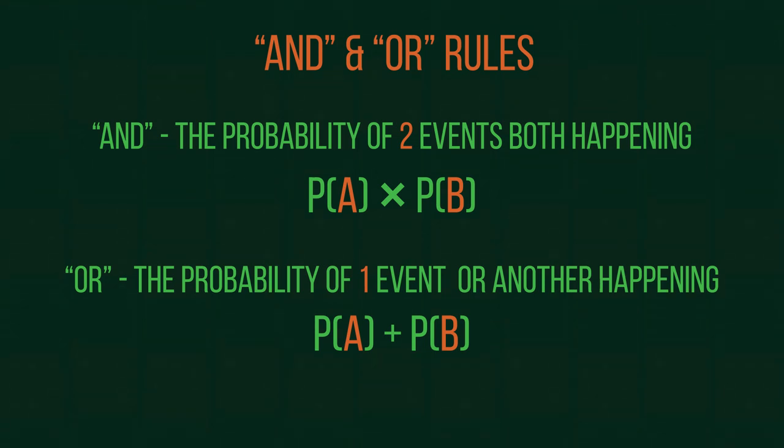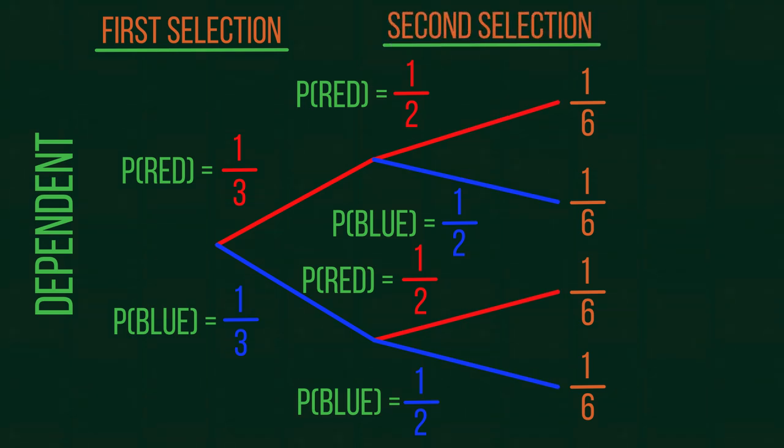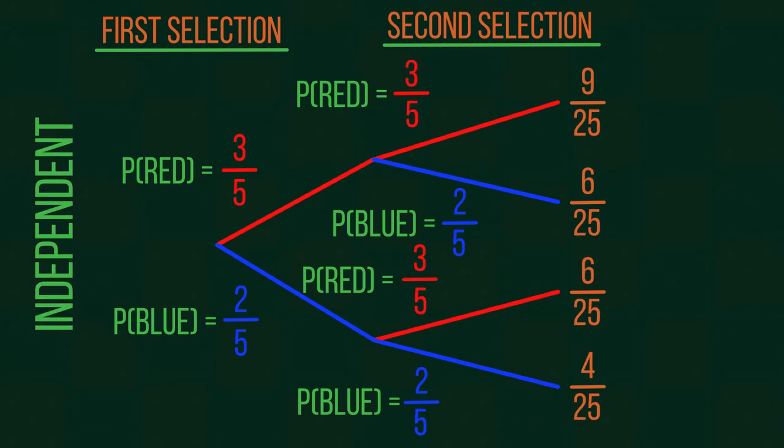There are two types of tree diagrams for two types of situations: dependent and independent. Dependent tree diagrams occur when the second probability is affected by the first. For example, if a colored counter is chosen and not replaced, the second probability is changed. Independent probabilities are completely separate from each other, and so the second choice remains the same, no matter the first. These types of tree diagrams are often easier for this reason.